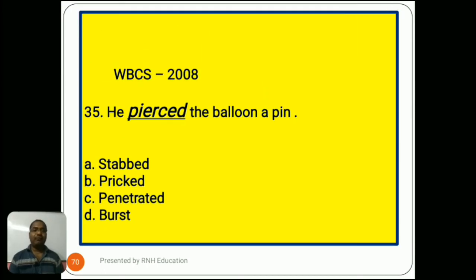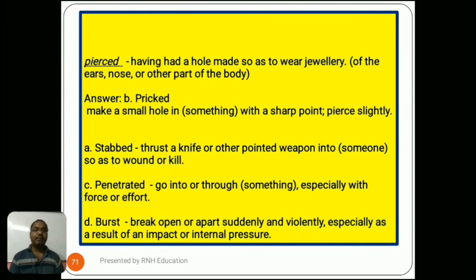Question number 35, from 2008: 'He pierced a balloon with a pin.' Options are A) stabbed, B) pricked, C) penetrated, D) burst. Pierced means having had a hole made with a sharp point. The right answer is B) pricked, meaning to make a small hole in something with a sharp point. Option A, stabbed, means thrust a knife or other pointed weapon into someone. Option C, penetrated, means go into or through something, especially with force. Option D, burst, means break apart suddenly and violently, especially as a result of internal pressure.